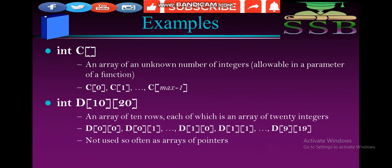Another example: integer C — an array of unknown numbers of integers, allowable in parameters of functions. It can be an unlimited number of elements. We can write integer C with blank brackets, also defined as C[0], C[1], C[2] and up to C[max-1]. This is basically the syntax of how you declare a variable for an array.